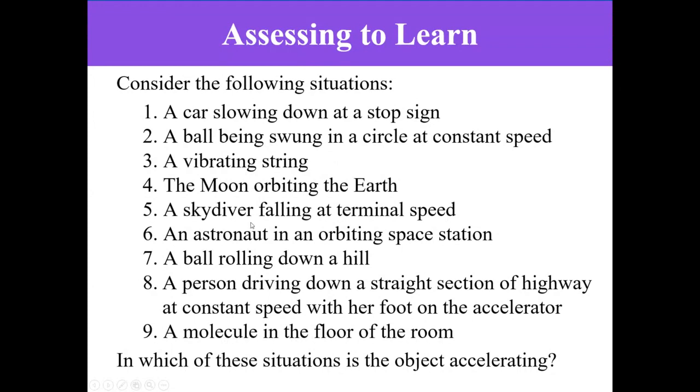An astronaut in an orbiting space station. A ball rolling down a hill. A person driving down a straight section of highway at constant speed with her foot on the accelerator. A molecule in the floor of the room. In which of these situations is the object accelerating?